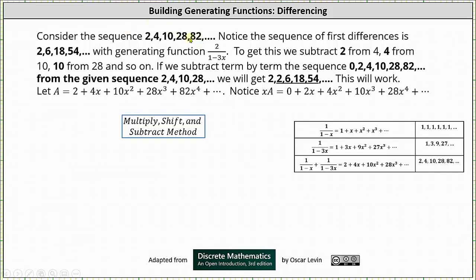Recall from the previous lesson, we already know the generating function can be found by summing the generating functions for the sequence of ones and the sequence one, three, nine, 27, and so on. In this lesson, we'll use the method of differencing to hopefully get the same generating function. Now let's consider the sequence of first differences, which is two, six, 18, 54, and so on.